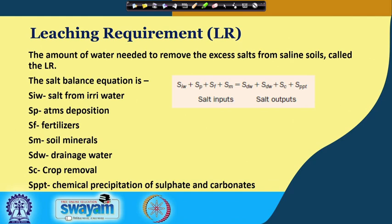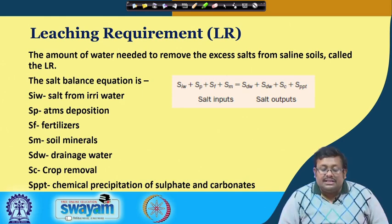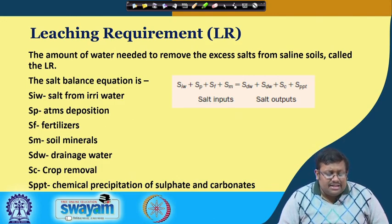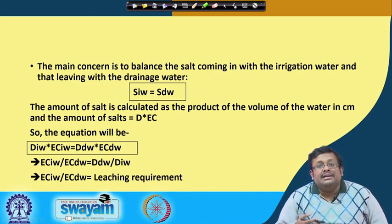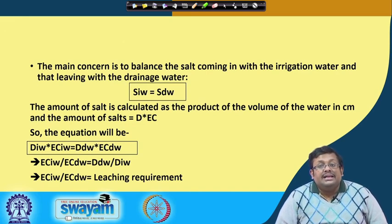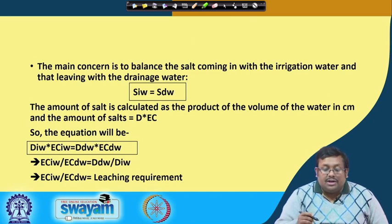In the last lecture we stopped while discussing about the leaching requirement. We discussed the salt balance equation by discussing the 4 inputs and 4 salt outputs. The main concern in the leaching requirement is to balance the salt coming in with the irrigation water and the salt leaving with the drainage water.